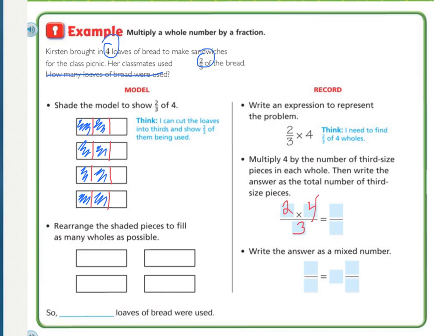And now, so how many did we shade in total? 2 times 4 equals 8. And what size are they? They are 3rds. So we have 8/3. But now they want to know how many loaves were used. So we need to rearrange our colored pieces, our 8 colored pieces, to fill in as many of these.